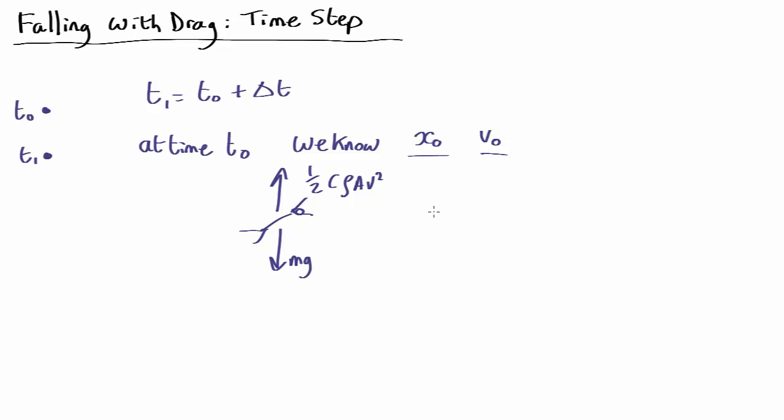So, the net upward force is going to be half c rho a v squared minus mg. That's equal to mass times acceleration, F equals ma back from Newton's laws. So, that tells us that the acceleration is equal to 1 over 2m c rho a v squared minus g.